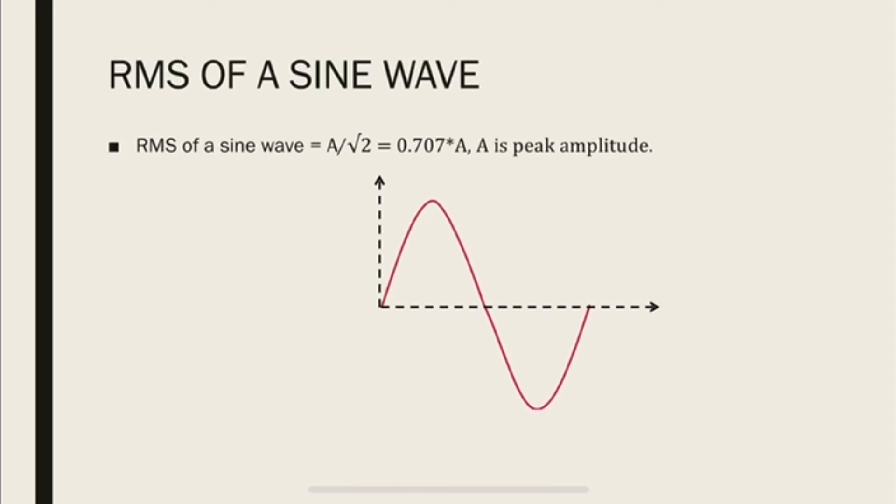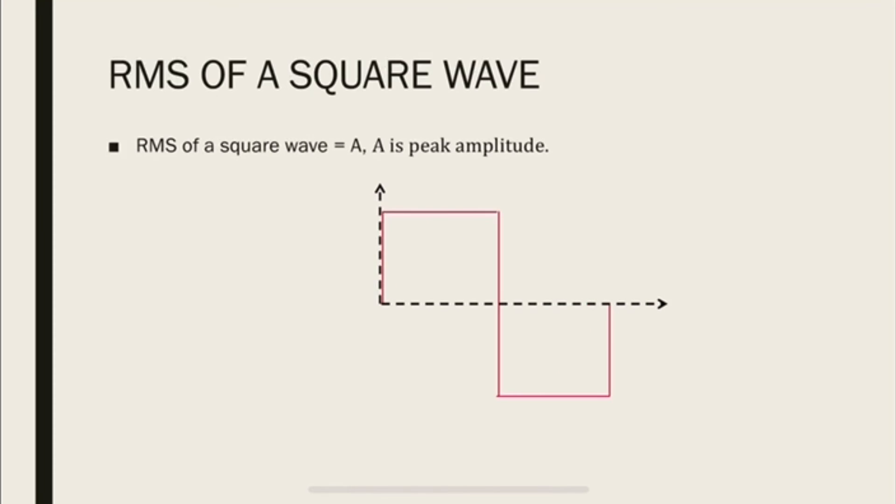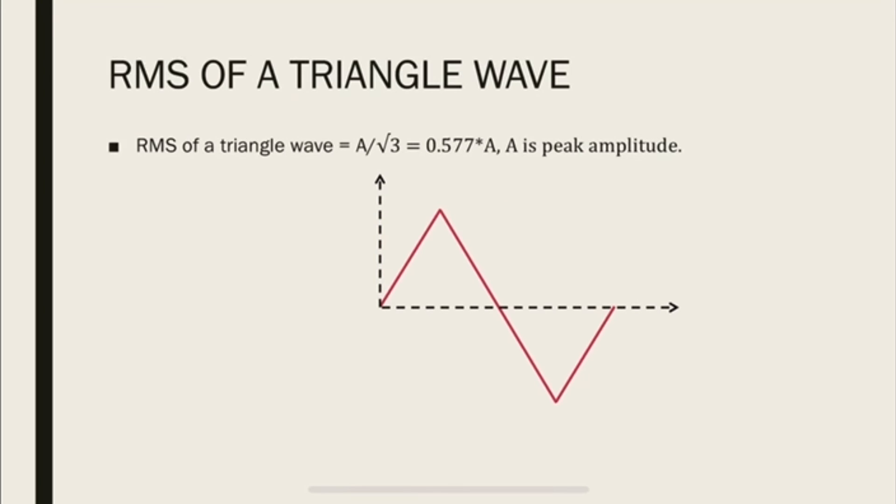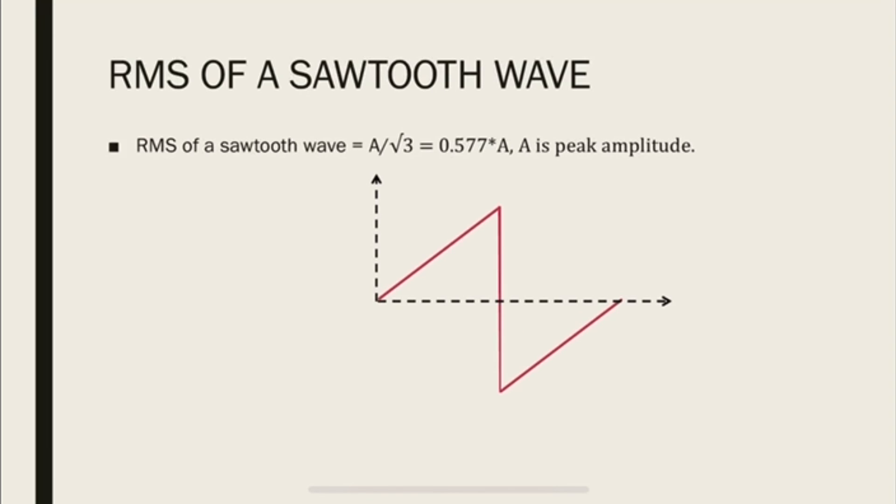So RMS of a sine wave has a relation to the peak amplitude, which is A, A is the peak amplitude, A over root 2 or 0.707 times A. For a square wave, the RMS is exactly the same as the peak amplitude. For a triangle wave, it is A over root 3 or 0.577 times A. For a sawtooth, it is the same as the triangle wave, 0.577 times A.